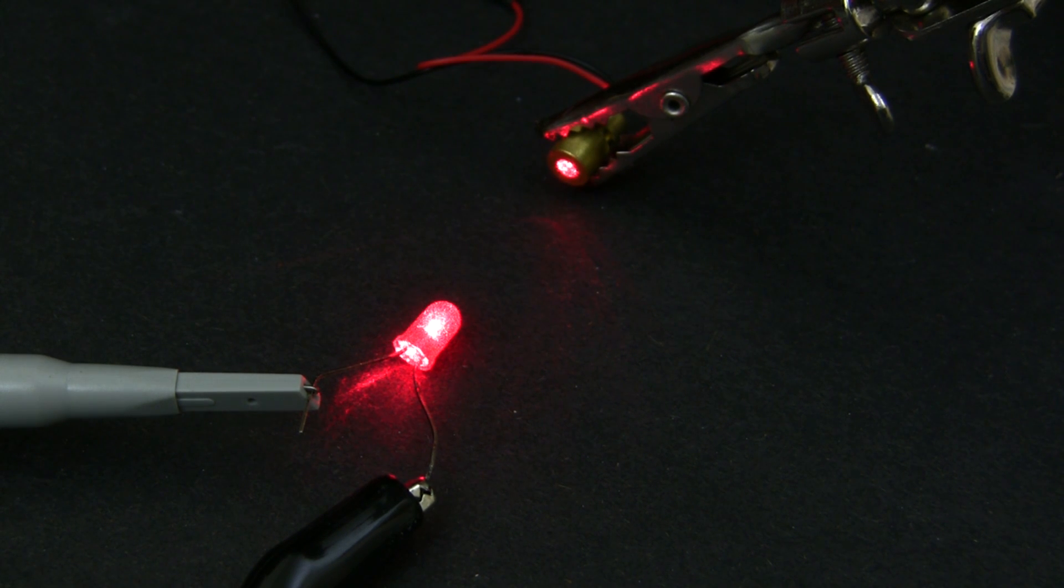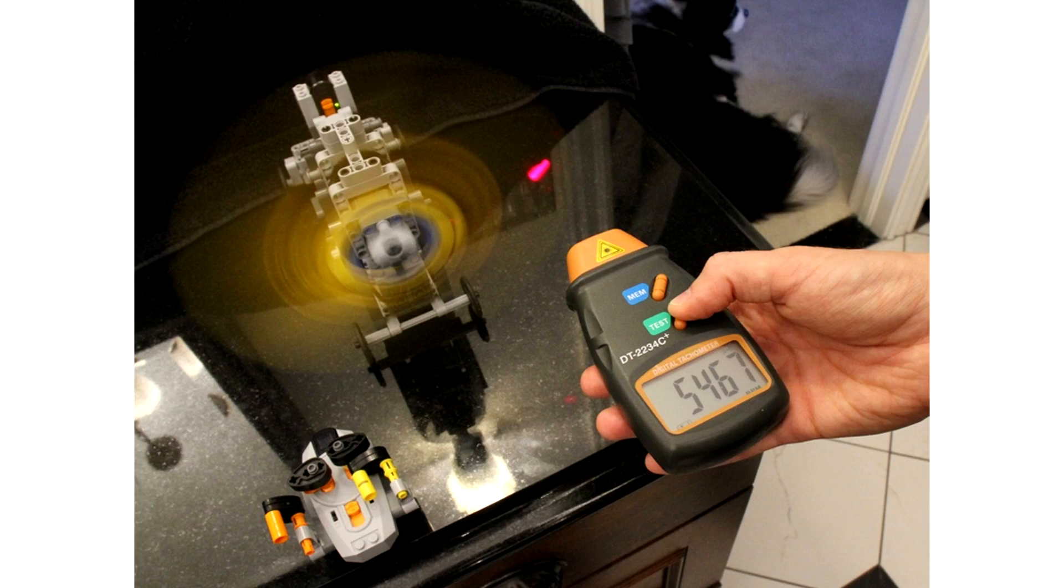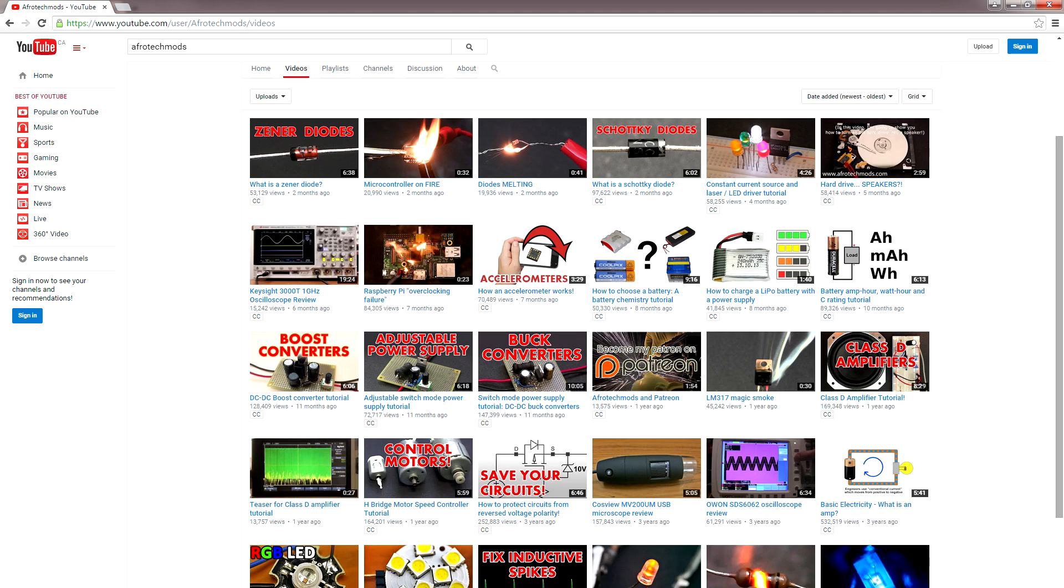In conclusion, LEDs make surprisingly good light sensors, and lasers are fun. You can use this technique to measure the RPM of wheels in your robots or propellers in radio control planes. Thank you for watching, don't forget to thumbs up and make sure you check out my other videos about electronics.